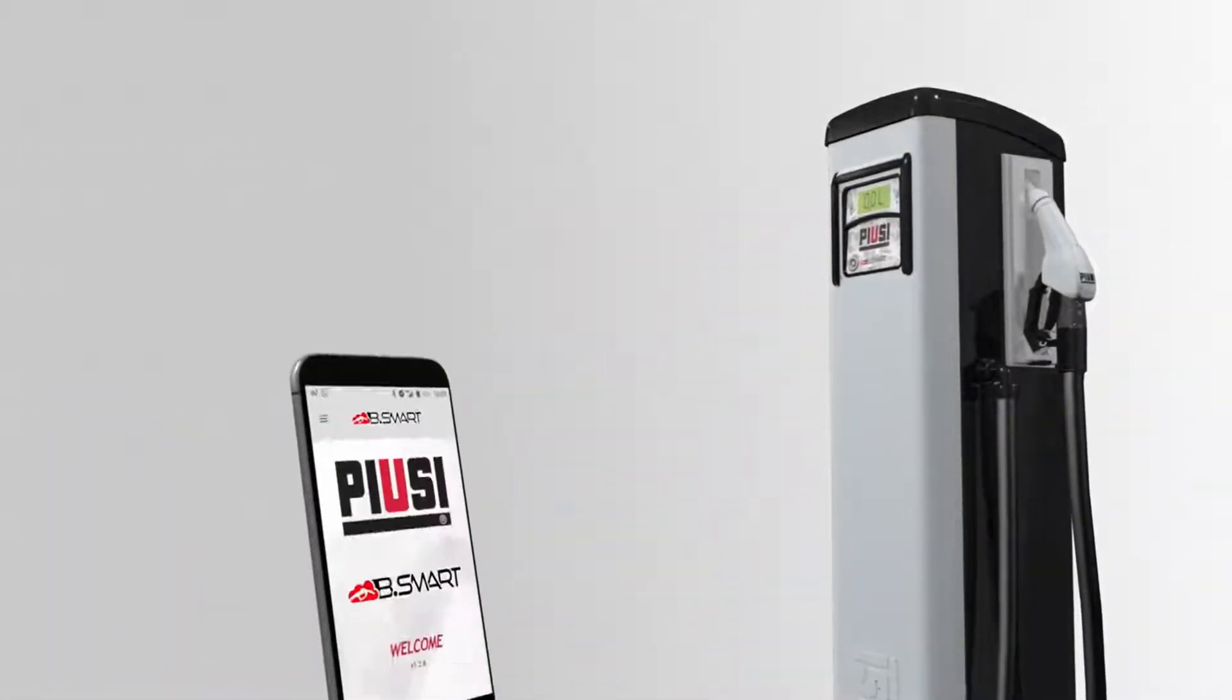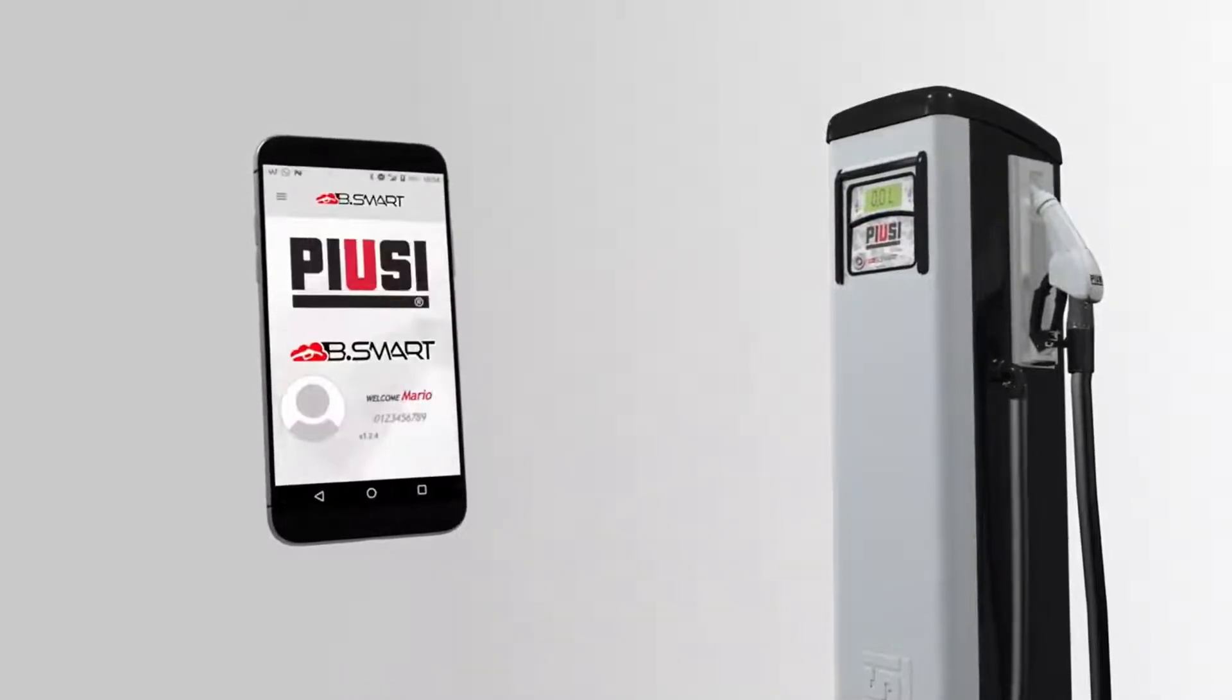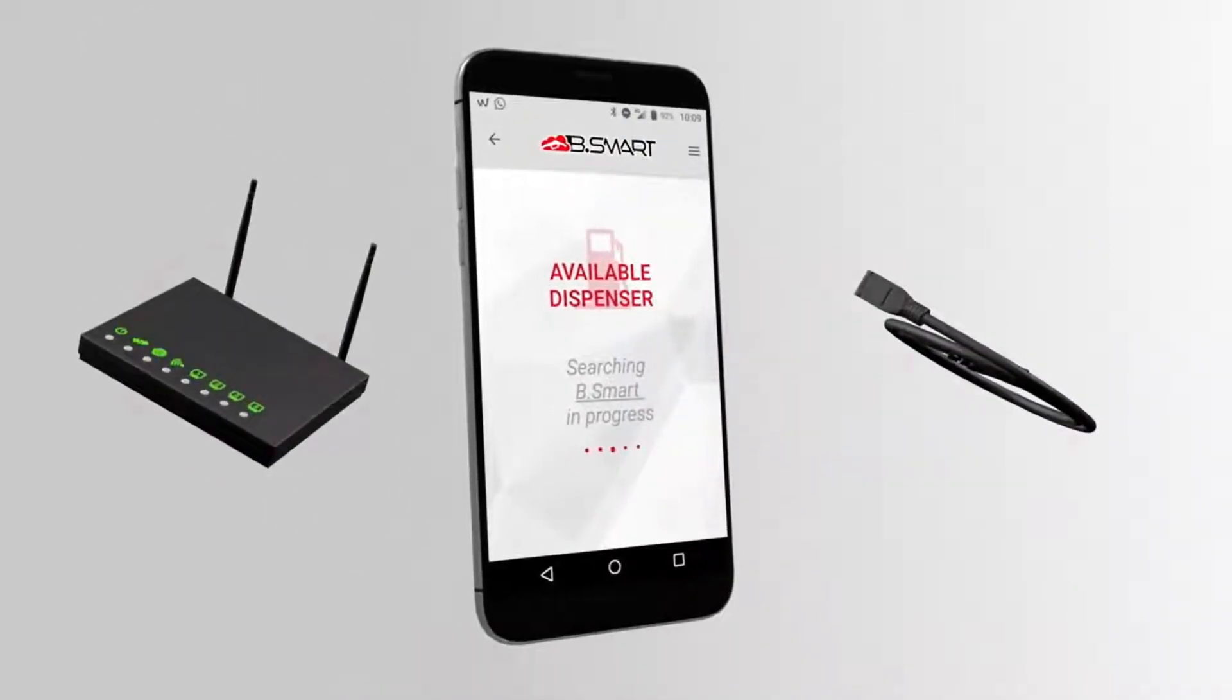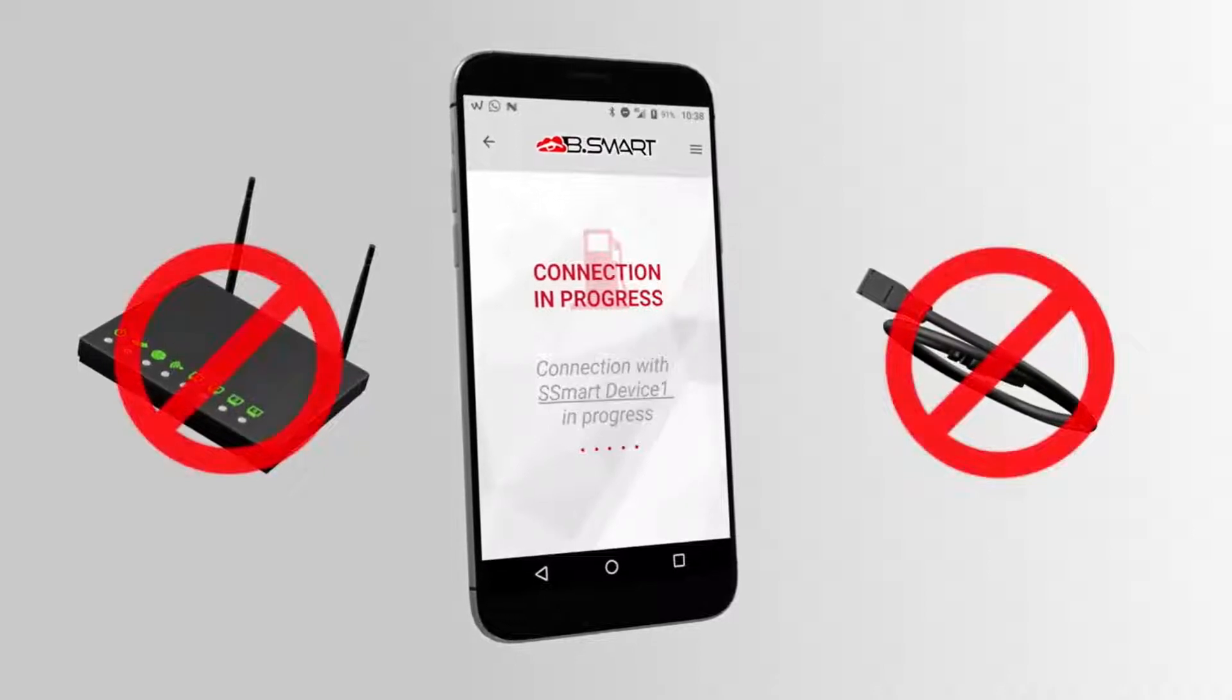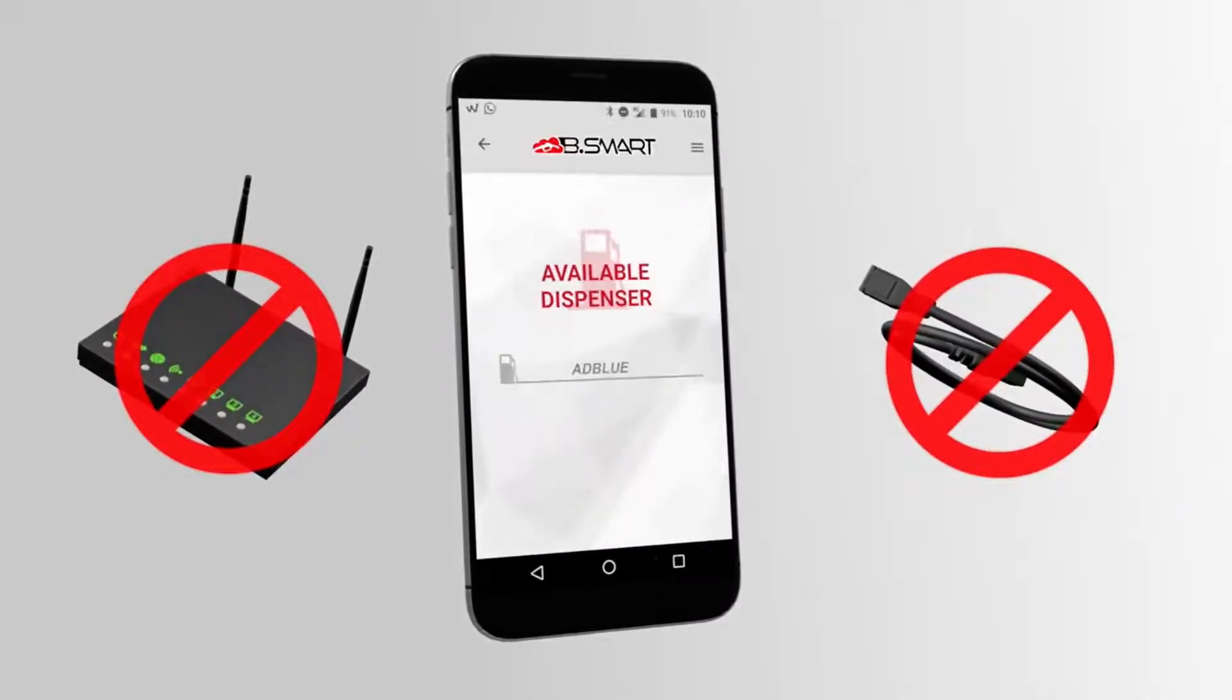All you need to enter the Bsmart world is a dispenser and a smart device. No need for a LAN or Wi-Fi network. No cabling either.